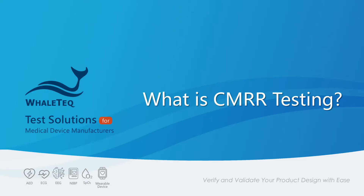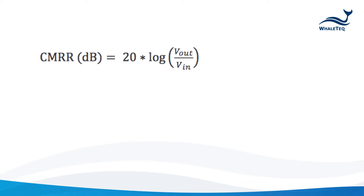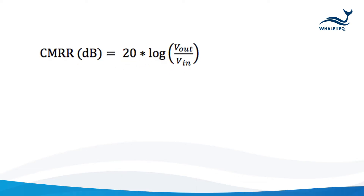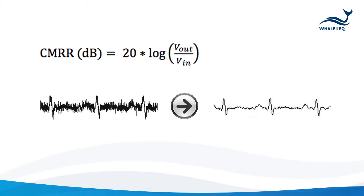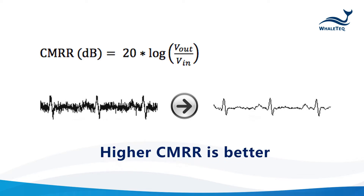What is CMR testing? Common mode rejection ratio, or CMRR, is the ratio of differential gain to the common mode gain, usually measured in decibels. In simpler terms, CMRR measures how severe of an electrical noise condition a device can withstand.